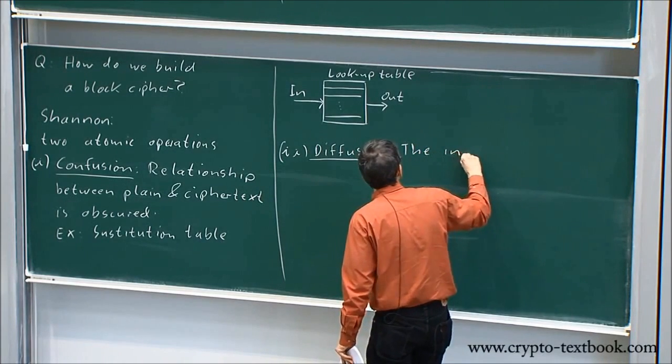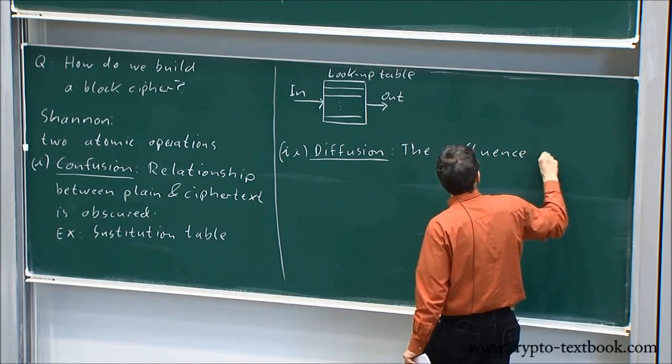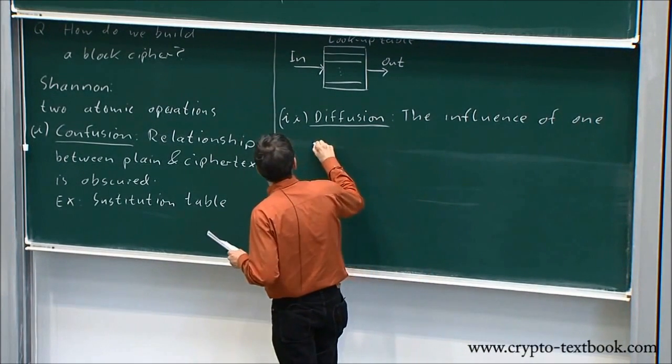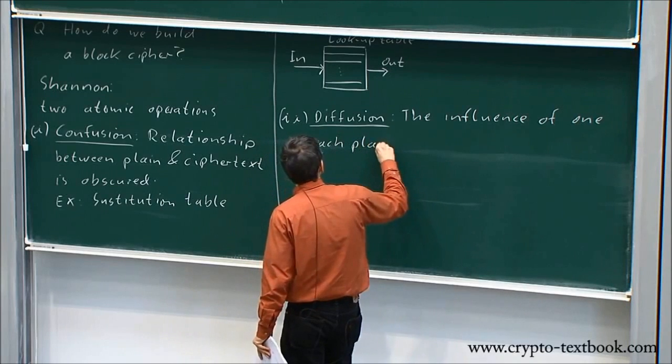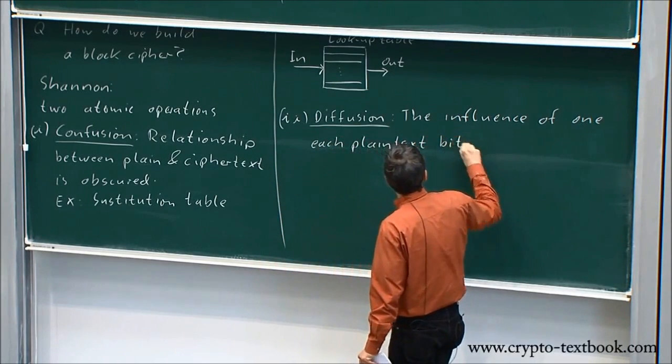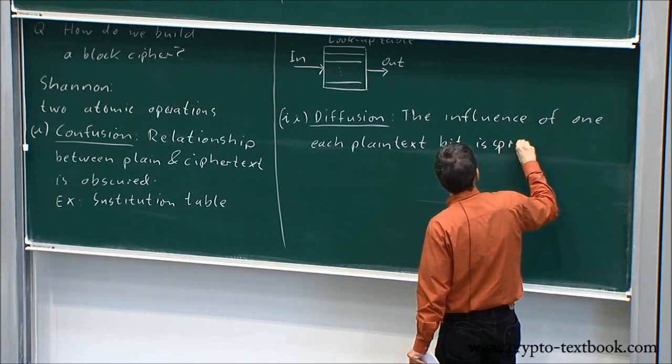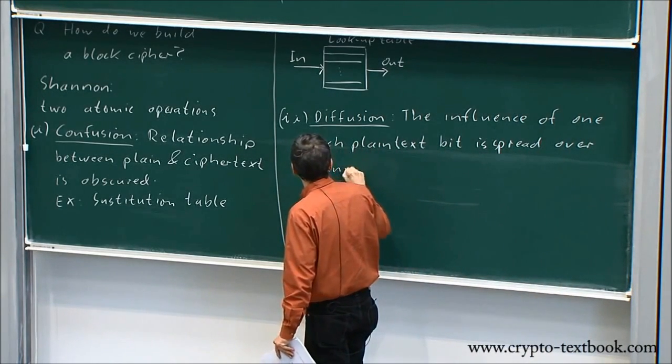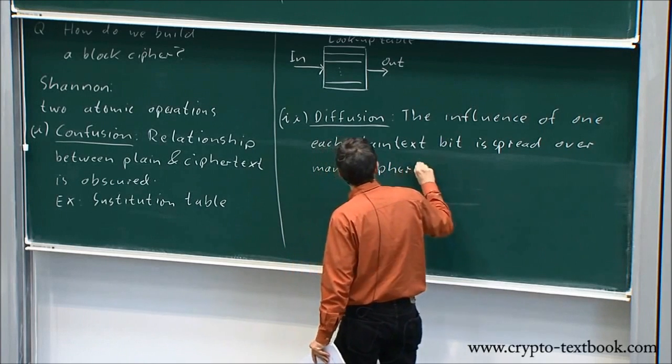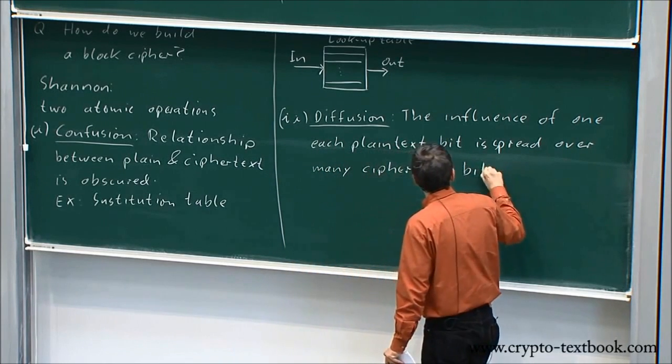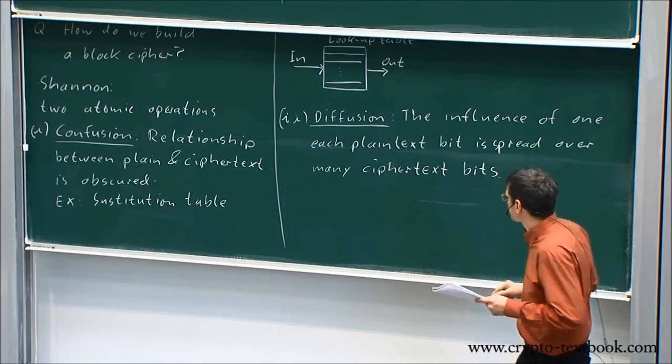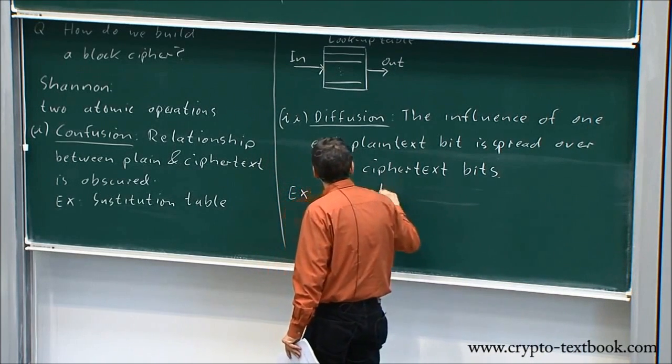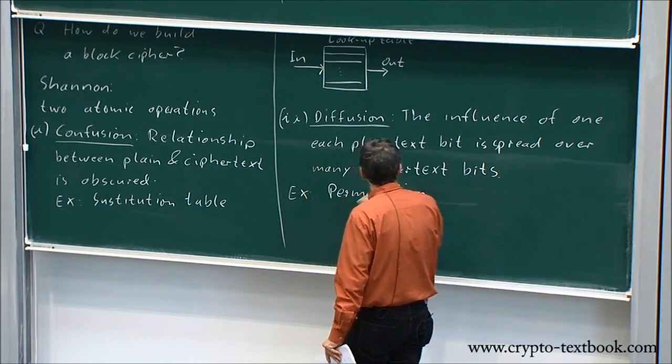Diffusion means the influence of each plaintext bit is spread over many ciphertext bits. The example for that is a permutation.